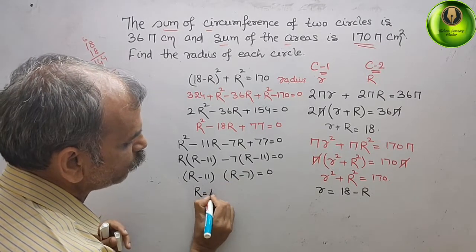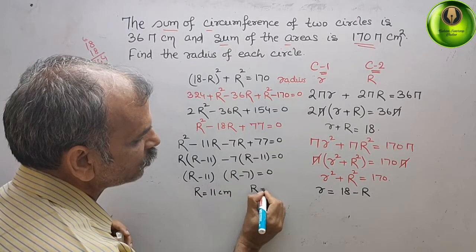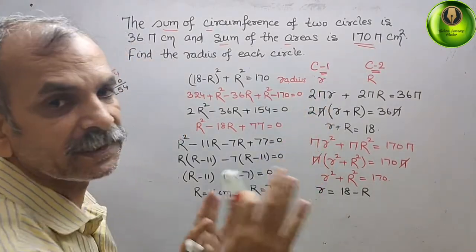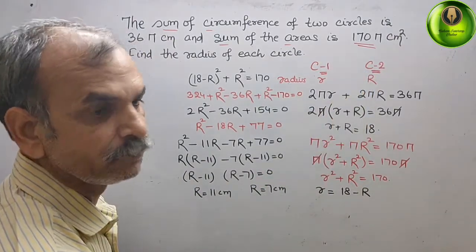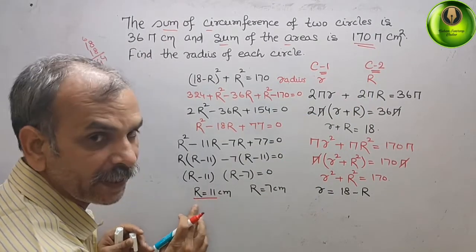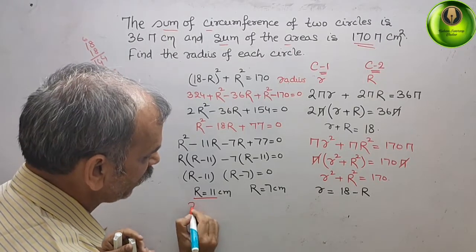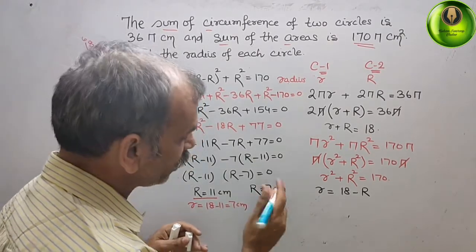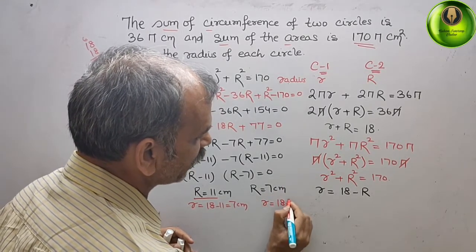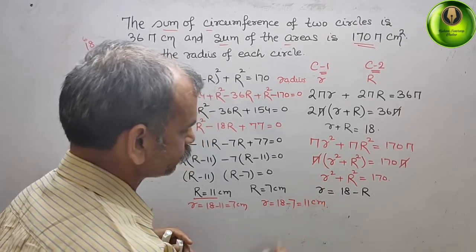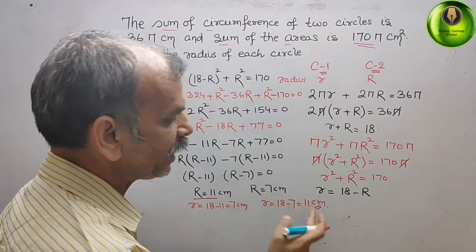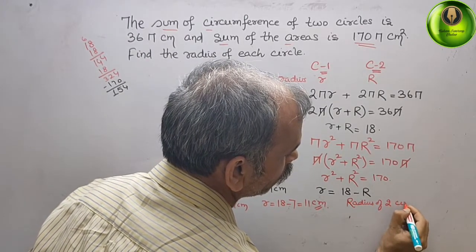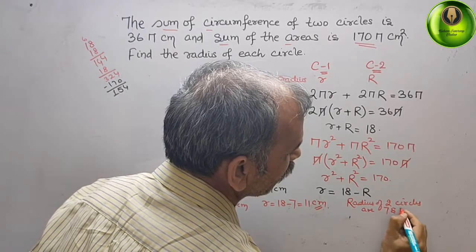That means capital R equals 11 cm or capital R equals 7 cm. Substituting back: if capital R is 11, then small r equals 18 minus 11, which is 7 cm. If capital R is 7, then small r equals 18 minus 7, which is 11 cm. Therefore, the radii of the two circles are 7 cm and 11 cm.